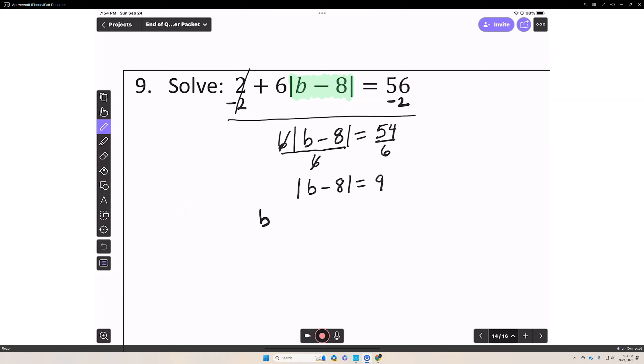You have b minus 8 equals 9, or b minus 8 equals negative 9. And then you solve the one-step equation. In this case, you add 8 to both sides. So b equals 17.